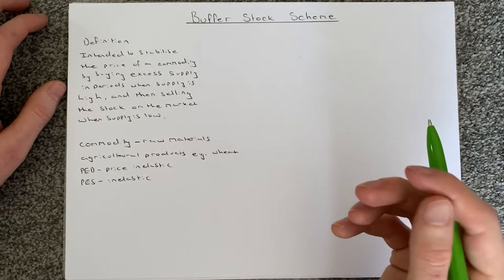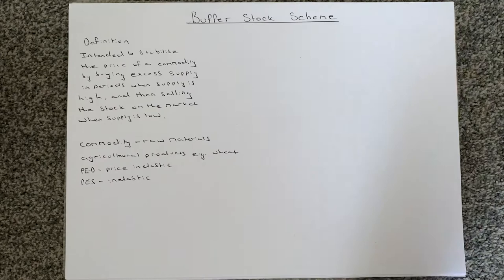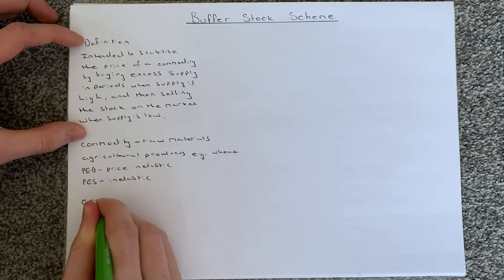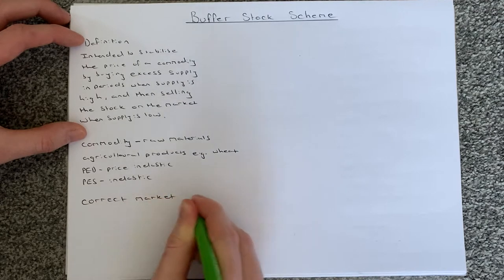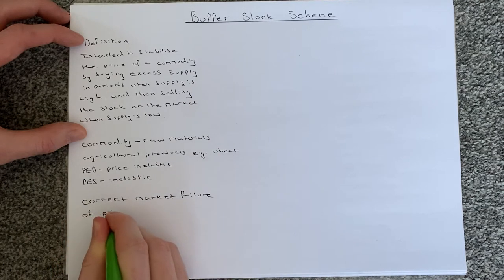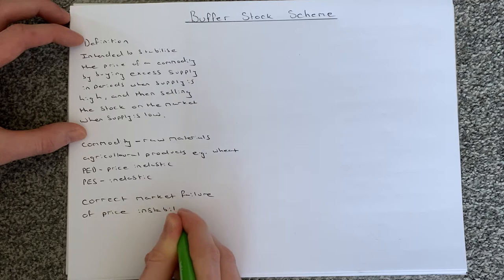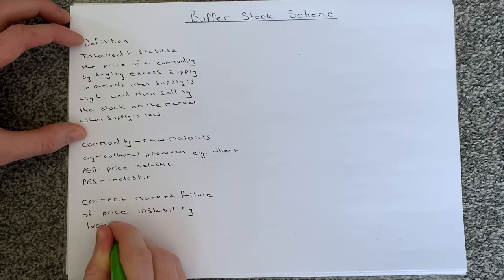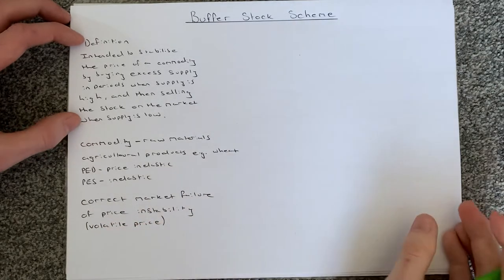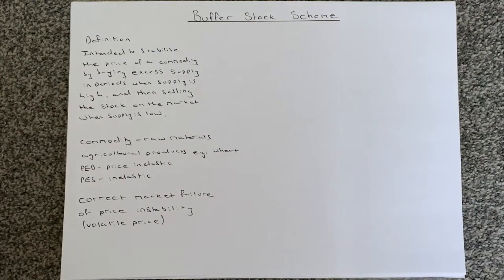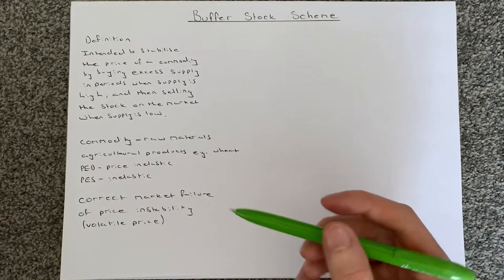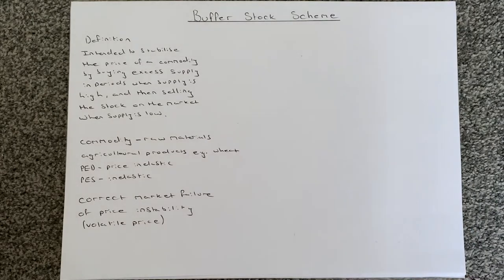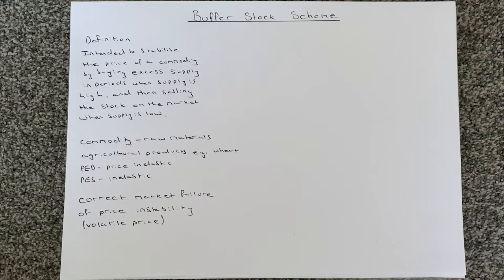That time lag means the price elasticity of supply of these products is inelastic. So what type of market failure does a buffer stock scheme correct? A buffer stock scheme is used to correct the market failure of price instability, also known as volatile prices. There is another video that explains why volatile prices — particularly with regards to commodities — is a significant issue that needs to be addressed, which is why we're going to look at a buffer stock scheme.